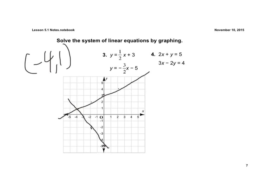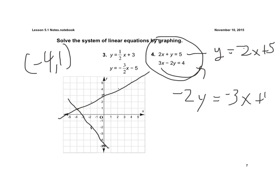In number 4, what do you think we need to do here? You should put them both into slope-intercept form. This one would be y equals negative 2x plus 5. For the next one, I'd have to move that over, so it'd be negative 2y equals negative 3x plus 4.